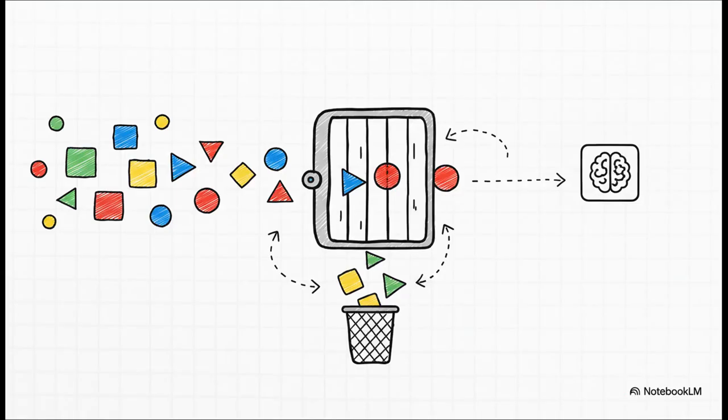So what exactly is Kimi Delta Attention? Instead of just keeping every single note forever, KDA uses this really precise gating mechanism. It intelligently decides what information to keep, and maybe even more importantly, what to forget. This allows it to use a fixed-size smart notebook that never grows out of control.